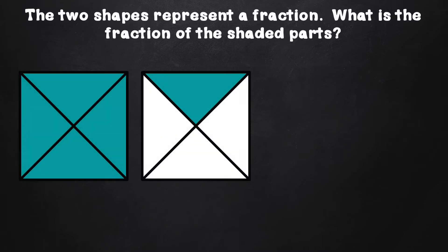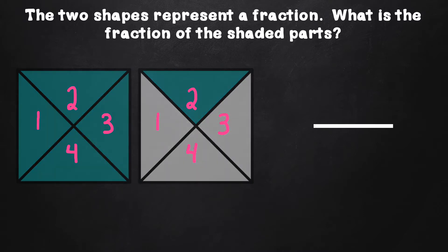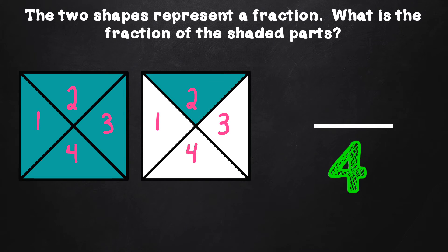Now that we know how to name the fraction of objects beyond a whole, we are going to determine the numerator and denominator of objects that are more than one whole. Let's look at this example. The two shapes represent a fraction. What is the fraction of the shaded parts? First, let us determine the denominator of the fraction. To determine the denominator, we need to count how many parts the squares are partitioned or divided into: one, two, three, four. Since each square has four pieces, the number four goes in the denominator.